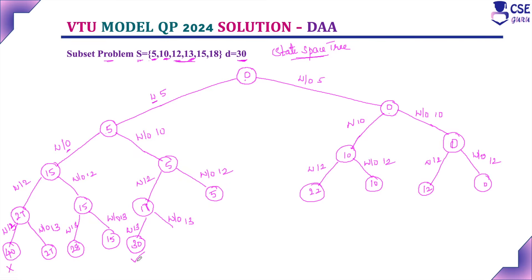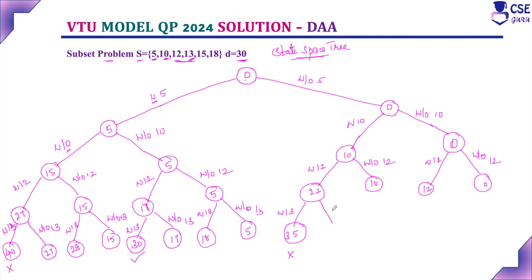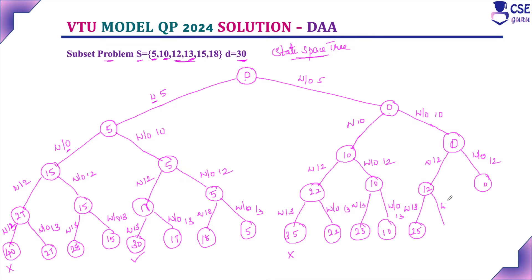Without 13 from the solution node: 17 only. With 13: 5 + 13 = 18. Without 13: 5. With 13 on the 22-branch: 22 + 13 = 35 — dead end. Without 13: 22. With 13: 10 + 13 = 23. Without 13: 10. With 13 on 12-branch: 12 + 13 = 25. Without 13: 12. With 13 on 0-branch: 0 + 13 = 13. Without 13: 0.